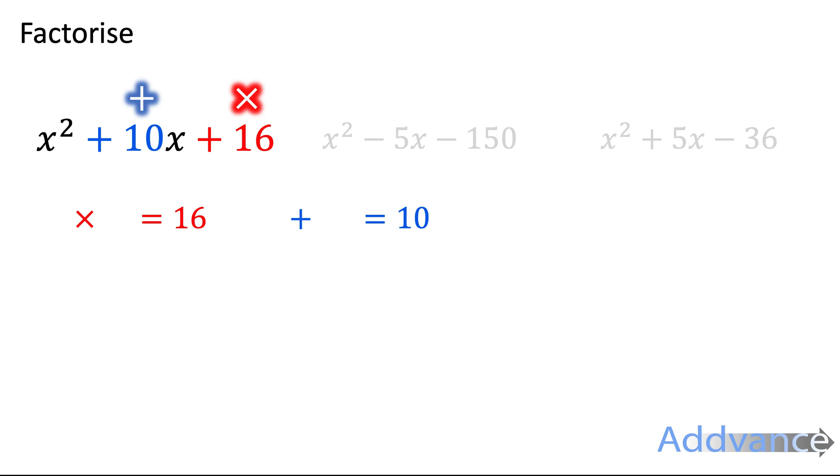To find those two numbers, let's write out all the pairs that make 16. 1 times 16, 2 times 8, and 4 times 4. They're all the pairs that multiply to make 16. And you should see that the pair that adds to make 10 is 2 and 8.